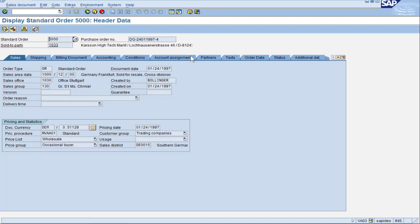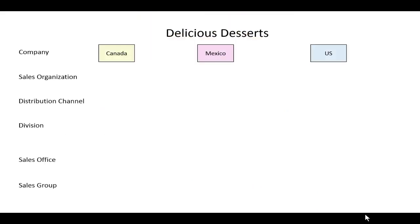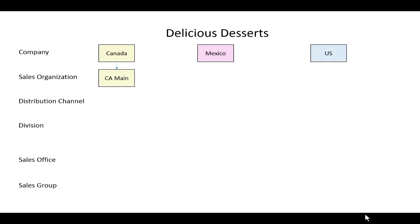Now that we've seen some examples, let's talk about what we want to configure for this lecture. We had a company called Delicious Desserts with three countries: Canada, US, and Mexico. The top three fields represent the sales area, and the bottom two fields are the extra configuration we're going to do. We will start with a very simple example in Canada. Sales organization represents the main group that is selling the product. For this scenario, we're only going to have one: Canada Main.